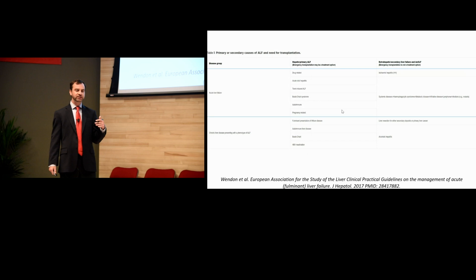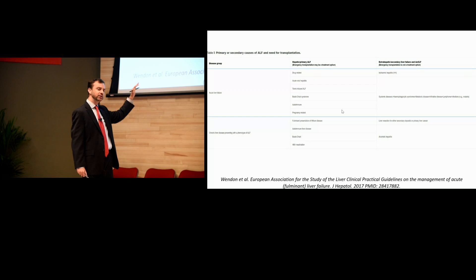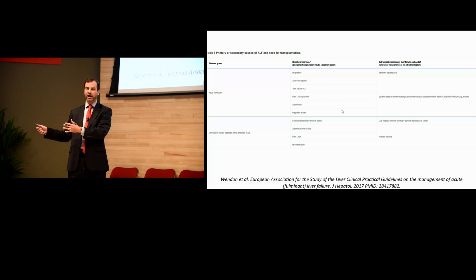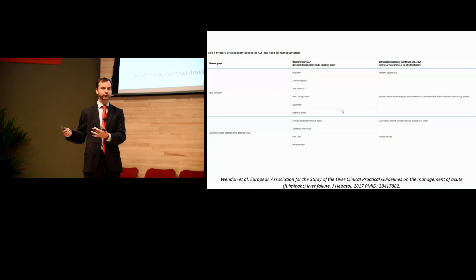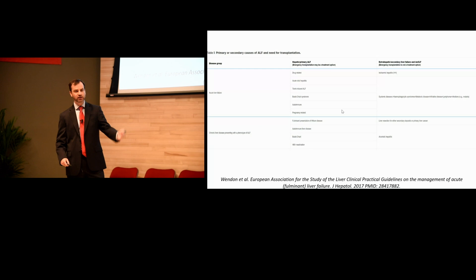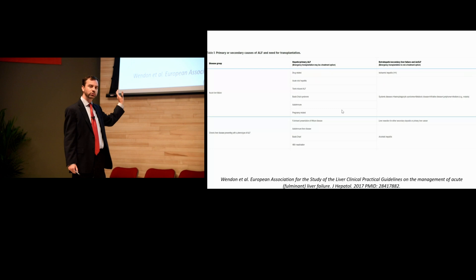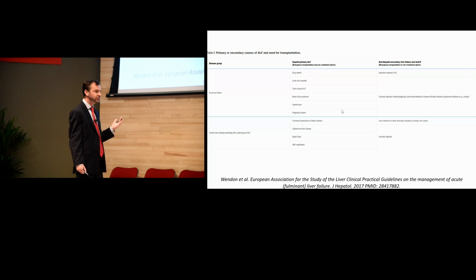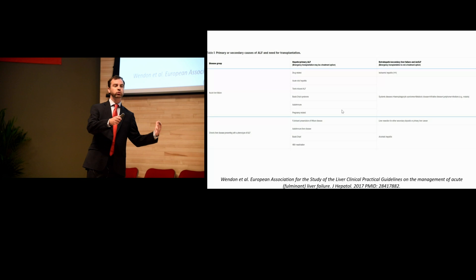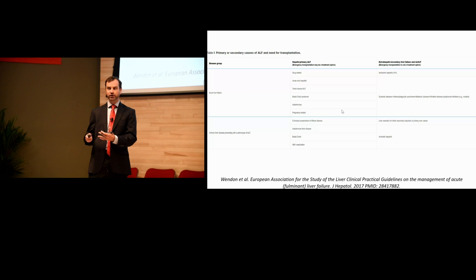The European guidelines stratify causes into primary hepatic causes and extrahepatic or secondary causes. This matters because extrahepatic causes of liver failure typically are not candidates for transplant. They also distinguish true acute liver failure from chronic diseases that can present with an acute phenotype — particularly Wilson's disease, Budd-Chiari, and hepatitis B reactivation.